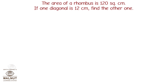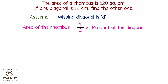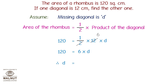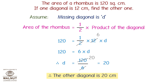Let's take a look at another one. The area of a rhombus is 120 cm². If one diagonal is 12 cm, find the other one. Let's assume the missing diagonal is D. Area of the rhombus equals half into product of the diagonals. Therefore, 120 equals half into 12 into D, so 120 equals 6 into D, so D equals 120 divided by 6, which equals 20. Therefore, the other diagonal is 20 cm.